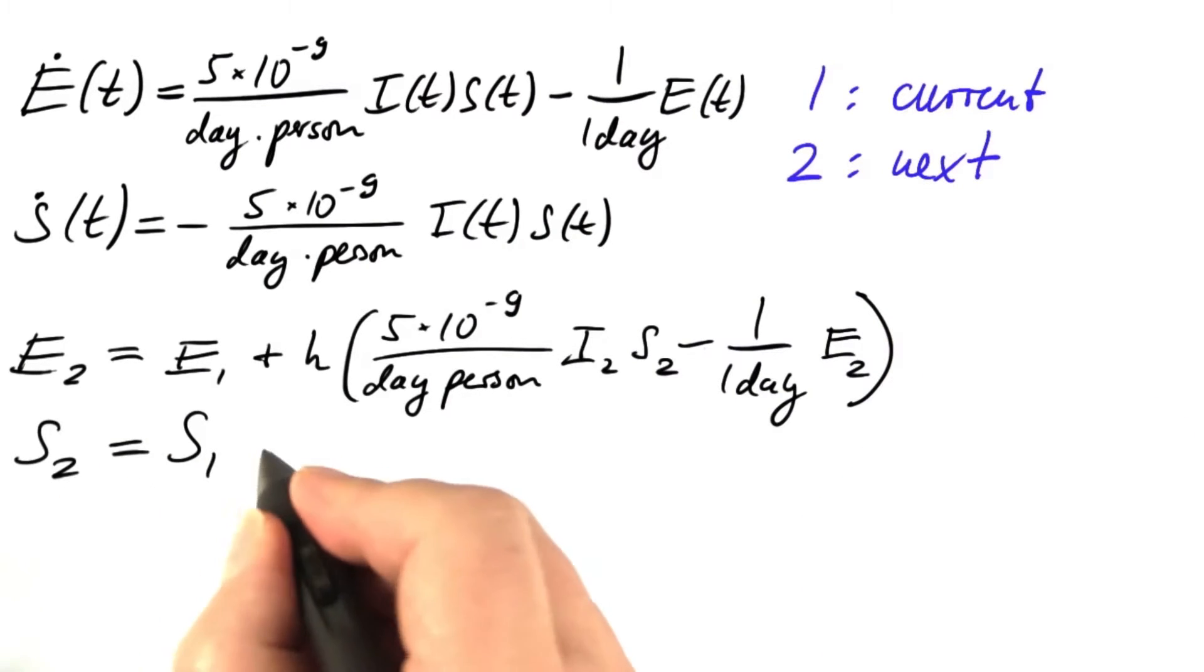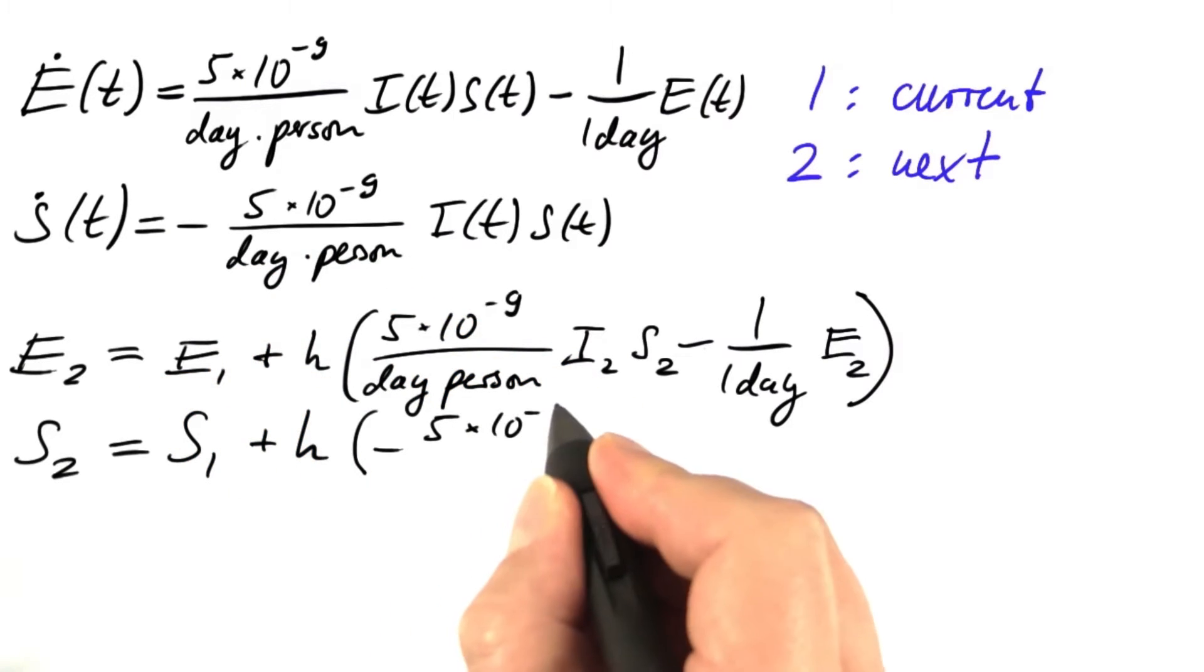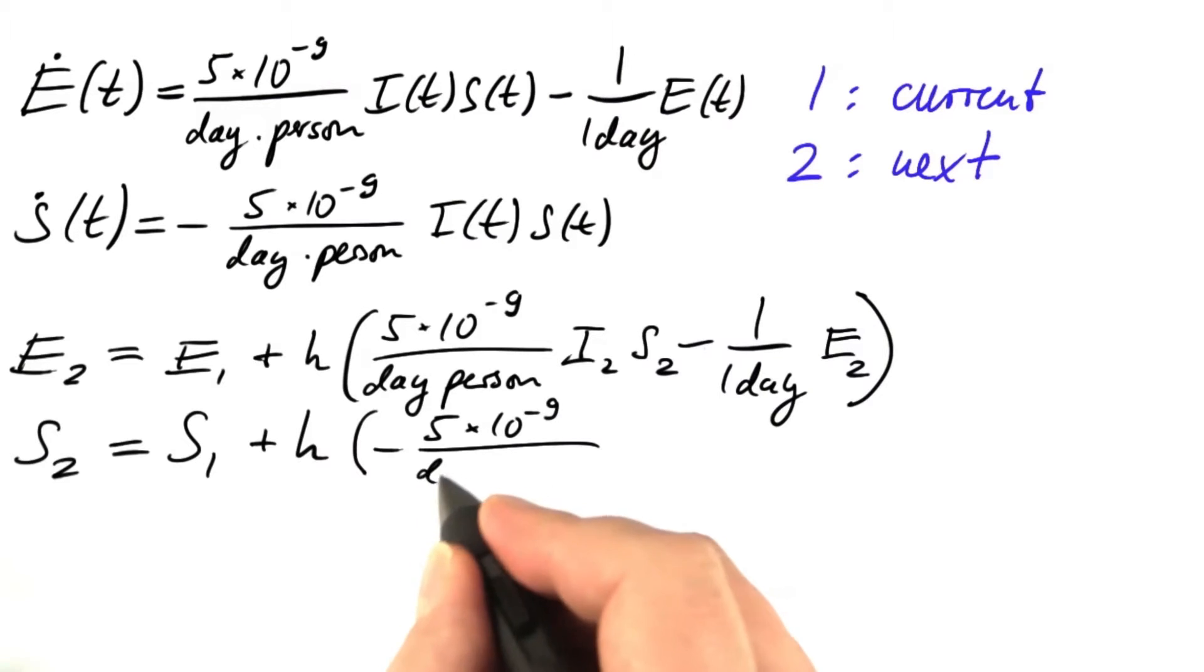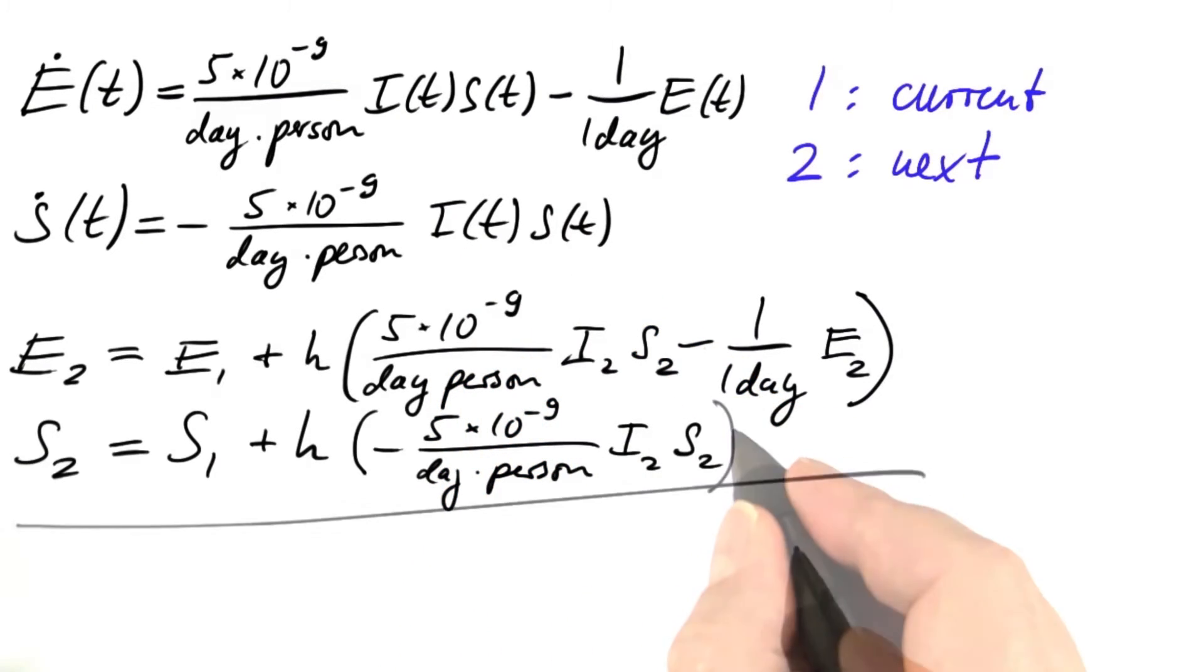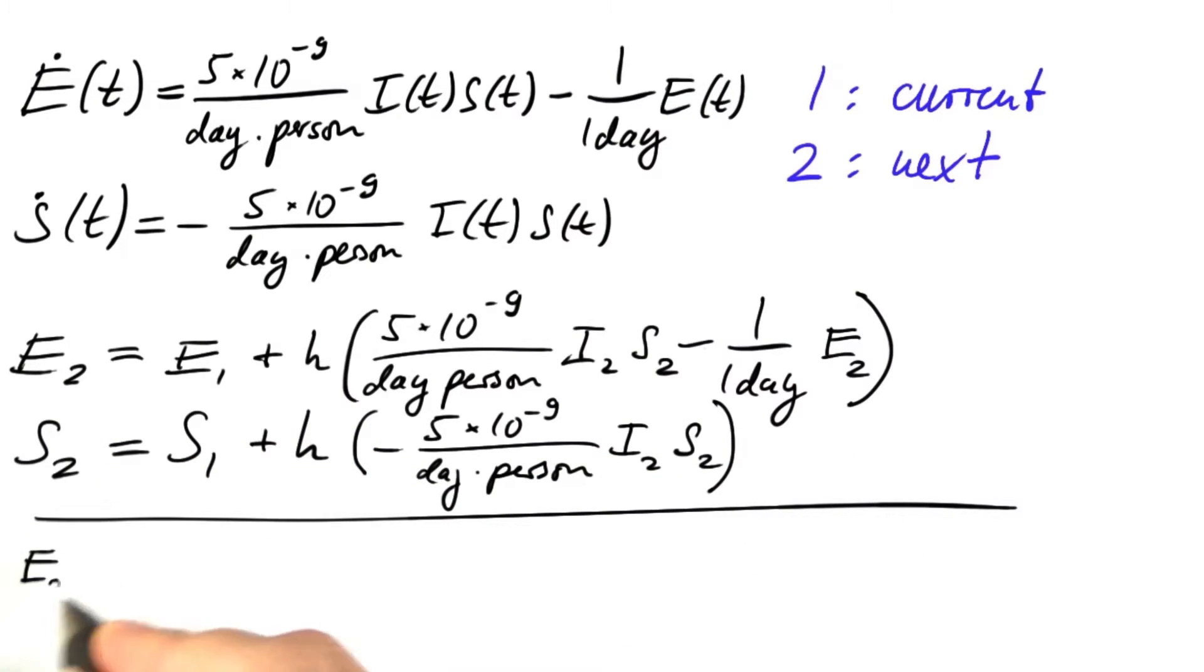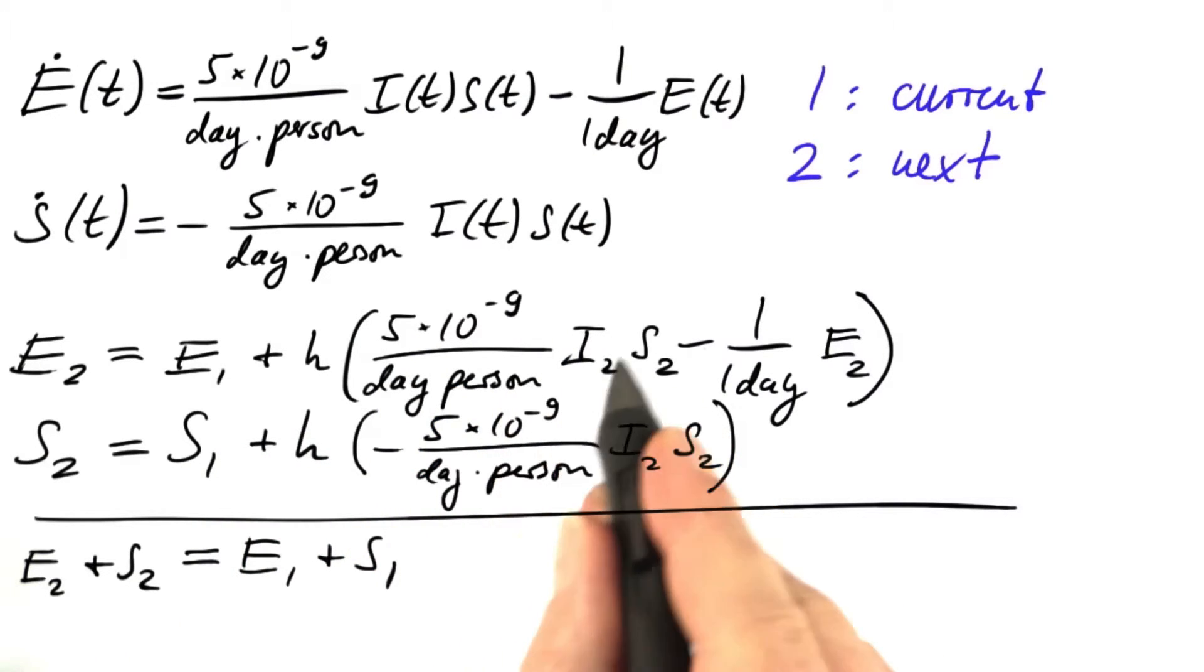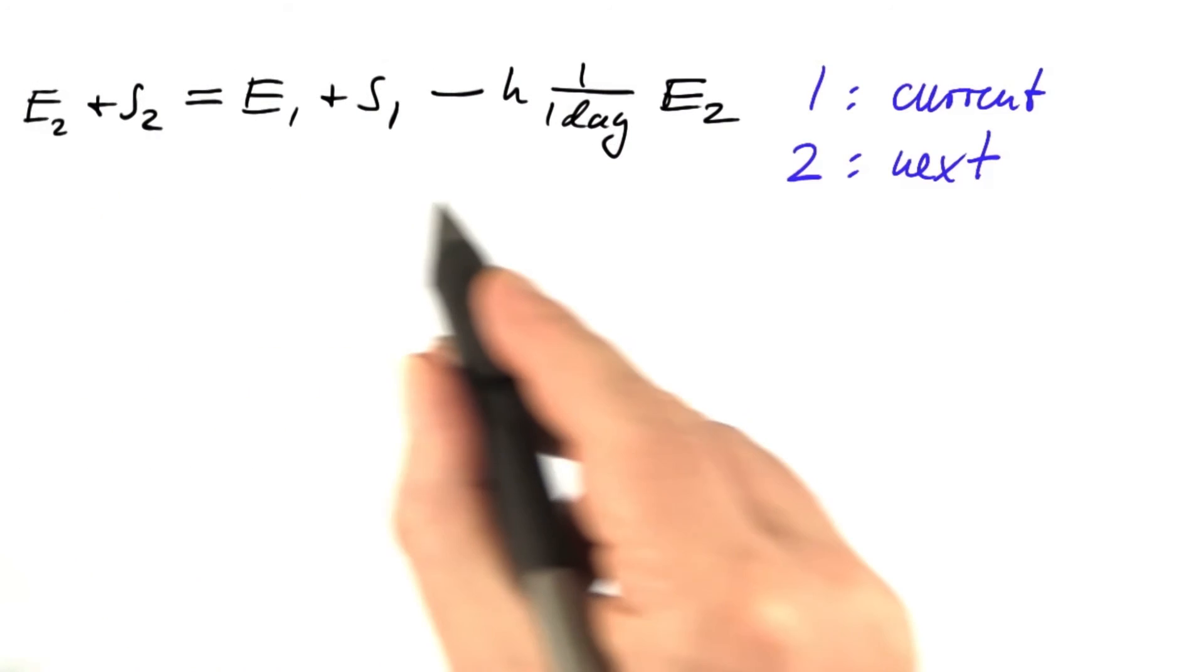And for s, the new value is the old one plus the time step times minus our coefficient, 5 times 10 to the minus 9 per day and person times i2, s2, backward Euler again. If you now form the sum of these two equations, you get e2 plus s2 equals e1 plus s1. This ugly expression cancels with that ugly expression and we are left with h times minus 1 over 1 day, e2. So this is what we have reached by now.